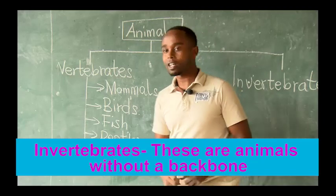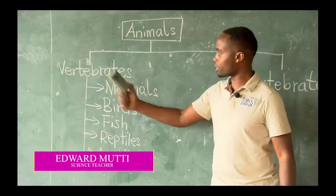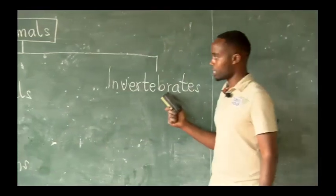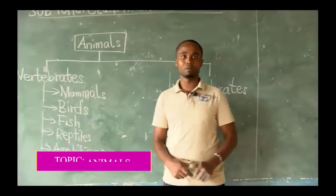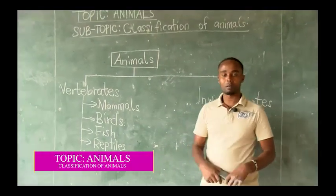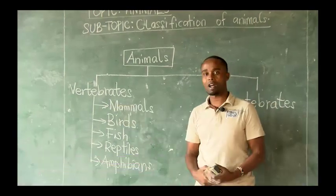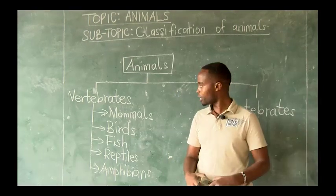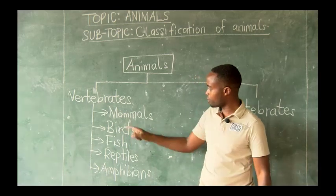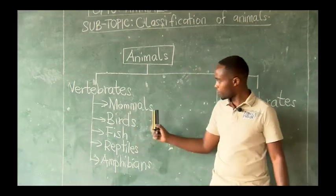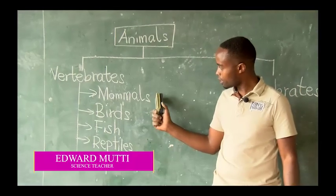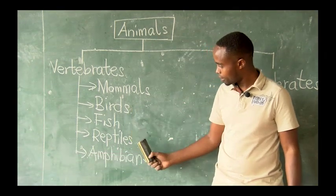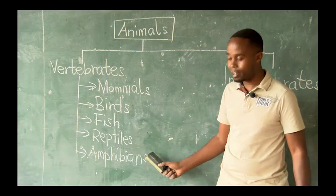From here, I want us to give out examples of vertebrates and also give out examples of invertebrates. Remember we have said that vertebrates are animals with a backbone, and they are classified into five groups. I have written the names for you on the board — I want you to read. Read the first one, the second one, the third, the fourth, and the fifth.